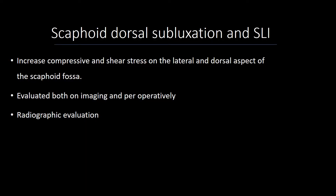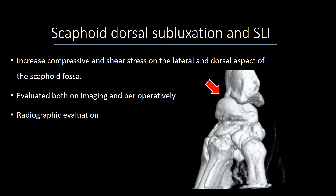Scaphoid dorsal subluxation is an important factor in scapholunate instability, as it increases compressive and shear stress on the lateral and dorsal aspects of the scaphoid fossa. This is evaluated commonly both on imaging and operatively, and you can clearly understand the impact on degenerative joint disease in the moving wrist, as you can see a dorsally subluxed scaphoid impinging against the dorsal rim of the radius.